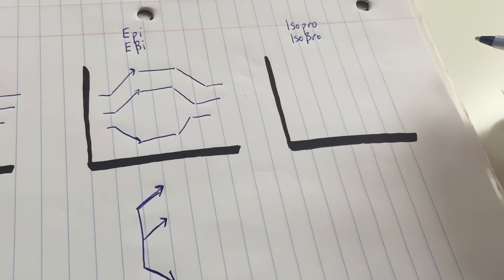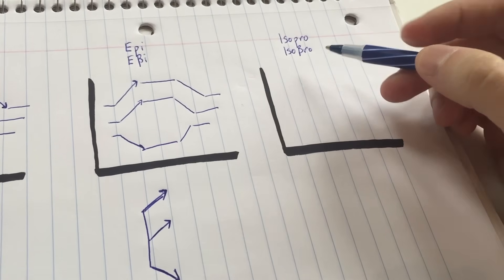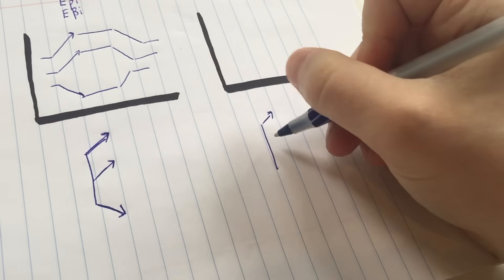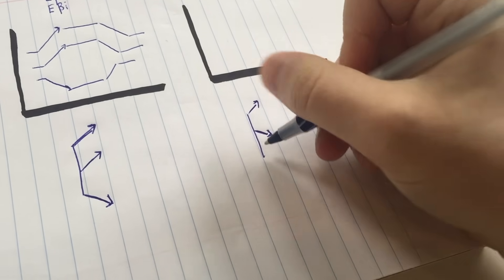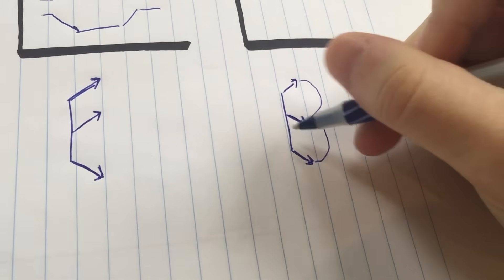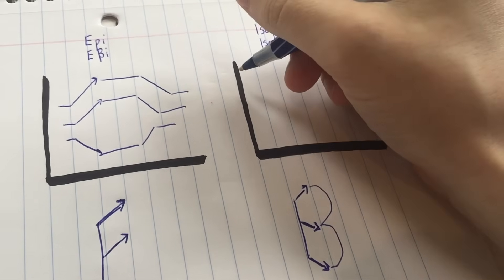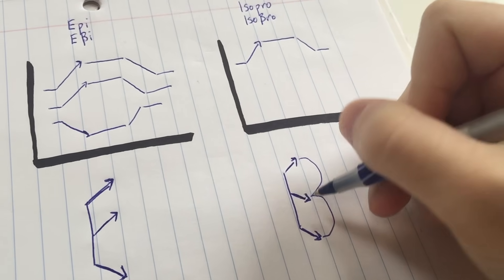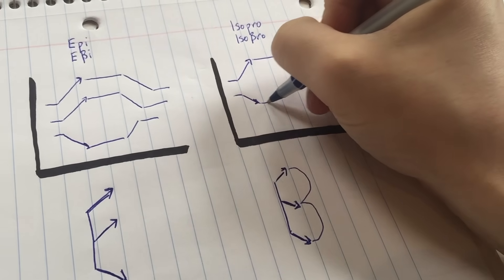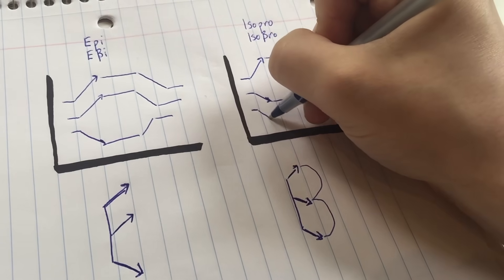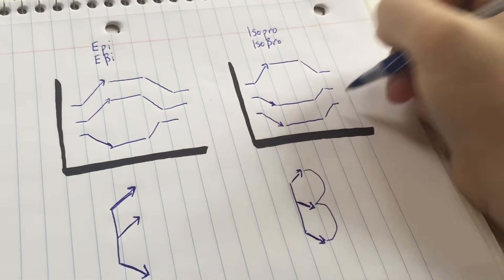Now let's do isobroteranol — we use the b in 'bro' from isobroteranol. Draw the back of the b: top part goes up to the right, middle part goes down to the right, and bottom part goes down to the right. So the pressure tracing follows up, down, down: systolic goes up to the right then back down; mean arterial pressure goes down to the right then back up; and diastolic goes down to the right, flat, then back up. That's the full tracing for isoproterenol.